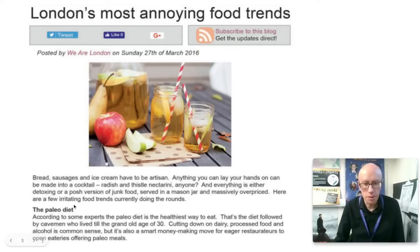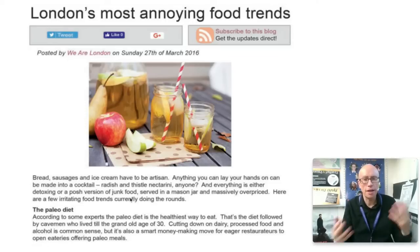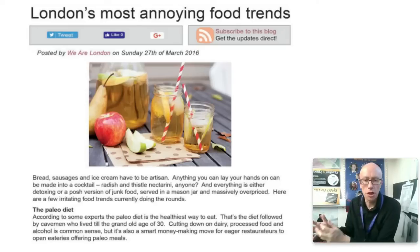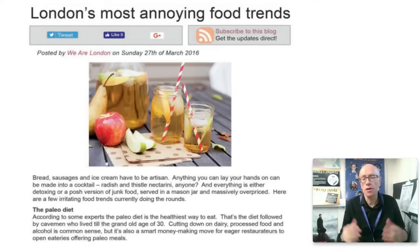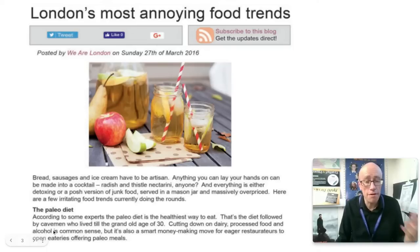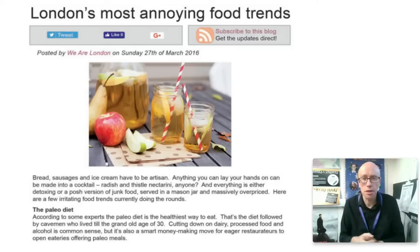You've got things either being 'a posh version of junk food' so you've got sort of antonyms going on there with an adjective 'posh' contrasted with its antonym 'junk', and you've constantly got these idiomatic expressions like 'doing the rounds'. And then it's going to take you through these different features of irritating foods and it starts off with the paleo diet. Again we've got humor that's being used here because in that second sentence we've got the mention of the diet followed by cavemen who lived until the grand old age of - so that's setting up the expectation that it's going to be like 90 or 100 - and then it undercuts it, it subverts it by giving you a small number, 30.